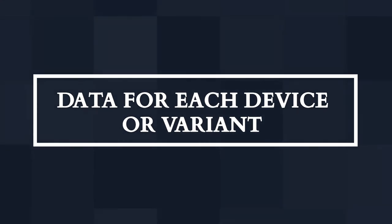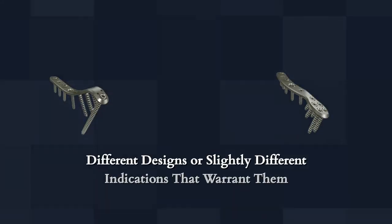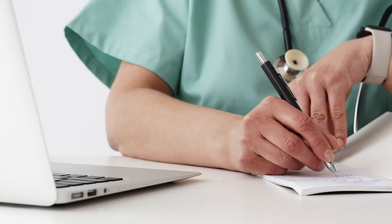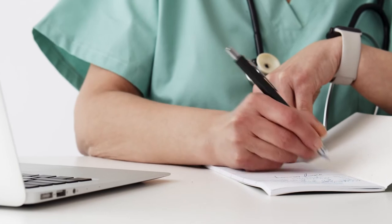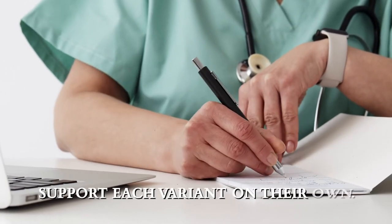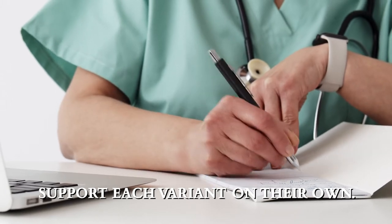The first one: data for each device or variant. Using a simplistic example of a trauma plate — let's say you have two plate variants with different designs, or maybe slightly different indications that warrant them to stand alone in the CER. In these cases, the expectation is you have sufficient data to support each variant on their own. If you do not, this may be where equivalence comes into play.